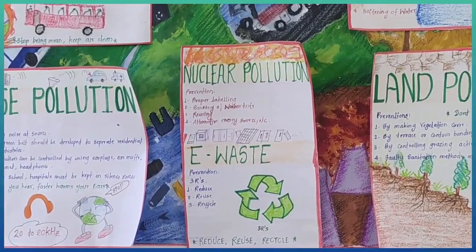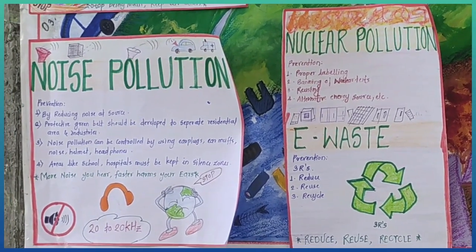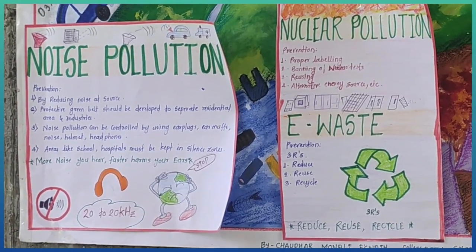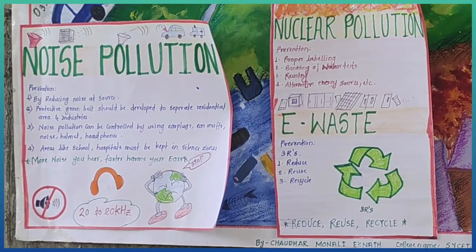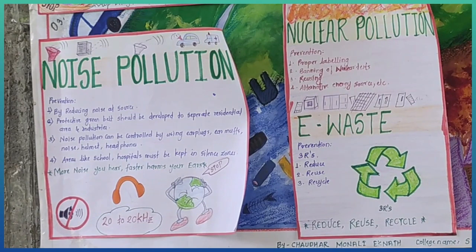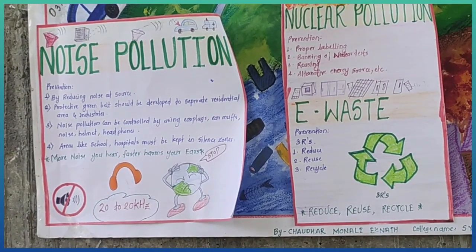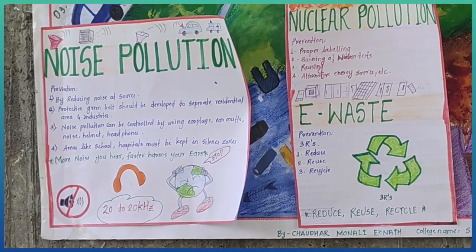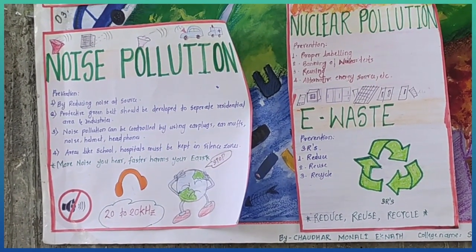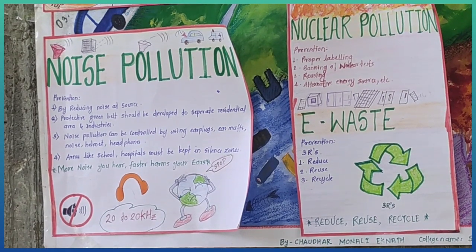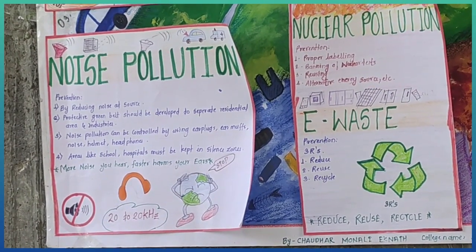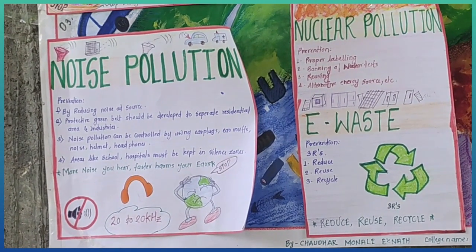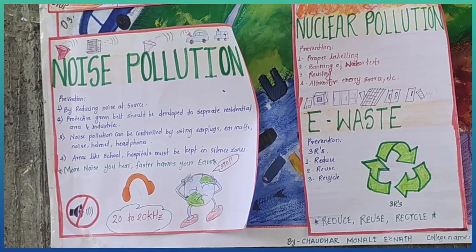Noise levels at various zones of city are given in decibels. Industrial area: 75 decibels for daytime and 70 decibels for nighttime. Commercial area: 65 decibels for daytime and 55 for nighttime. Residential area: 55 for daytime and 45 decibels for nighttime. Silence zone: 50 decibels for daytime and 40 decibels for nighttime.